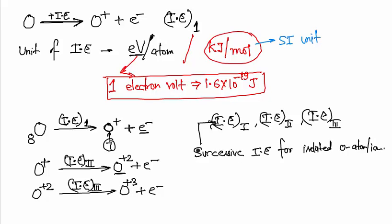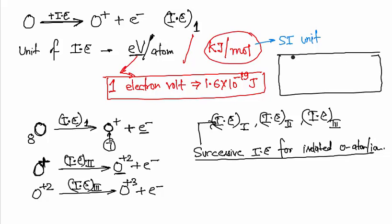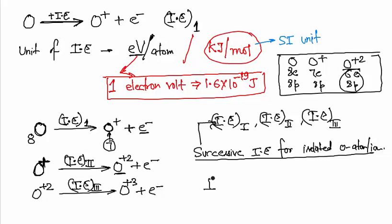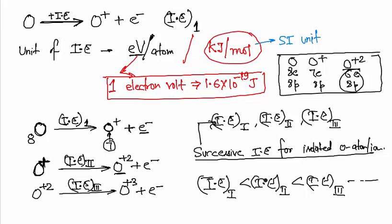It is easier to remove an electron from neutral oxygen than from O⁺ or O²⁺, because as positive charge increases, the nuclear hold on remaining electrons becomes stronger, making it more difficult to remove each successive electron. Therefore, successive ionization energies always increase in magnitude: IE₁ is minimum, then IE₂, then IE₃, and so on.